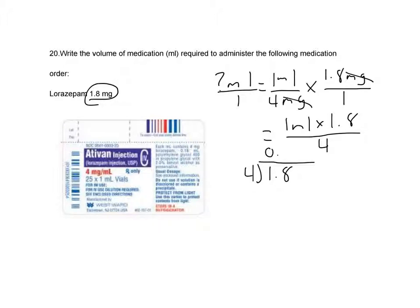And 4 goes into 18, 4 times. 4 times 4 is 16, equals 2. And we'll bring a 0 down. 4 goes into 20, 5 times. So our answer is going to be 0.45 milliliters. That's going to be the volume of medication that we administer.